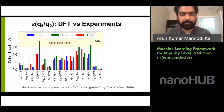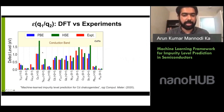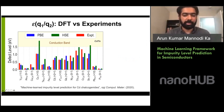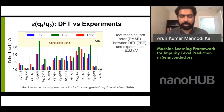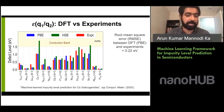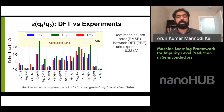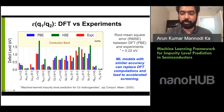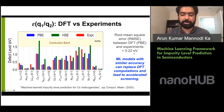To show how accurate DFT calculations are relative to experiments: for cadmium telluride, the root mean square error between PBE calculations and experiments is about 0.22 eV. The advanced HSE level gives results that are two orders of magnitude more expensive than PBE. We generate a dataset using the PBE functional because this is a reasonable accuracy given DFT's own limitations. If we can get ML models with similar prediction accuracy, we can replace expensive DFT computations and perform accelerated screening.